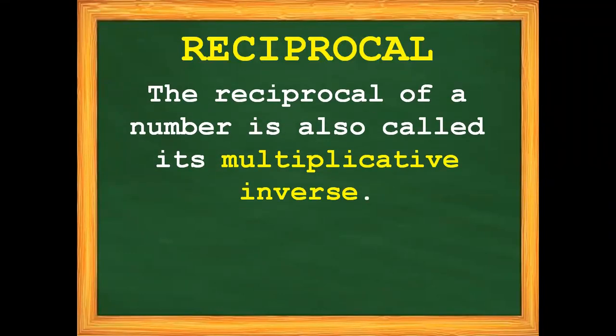The reciprocal of a number is also called its multiplicative inverse. For example, we have a whole number 2. Whole numbers always have an imaginary 1 as their denominator. If you still remember my previous video, there is an answer which is 3 over 1, and we simplified it into whole number 3. The same thing with whole number 2 — it has an imaginary 1 as denominator.